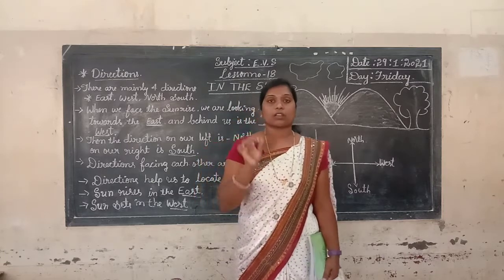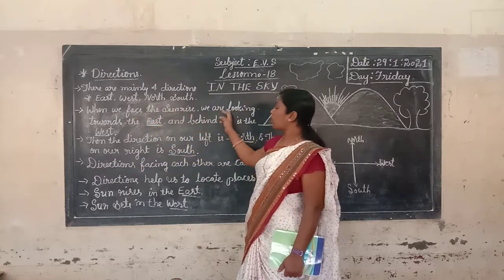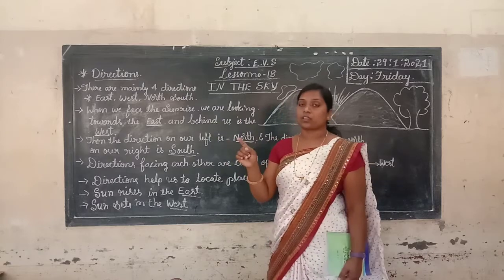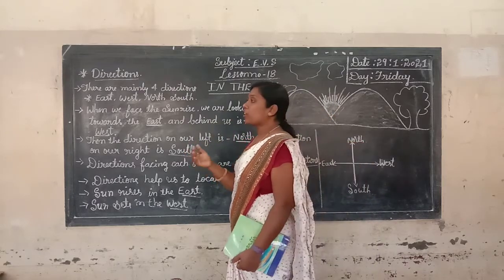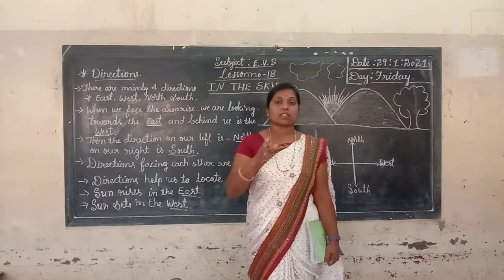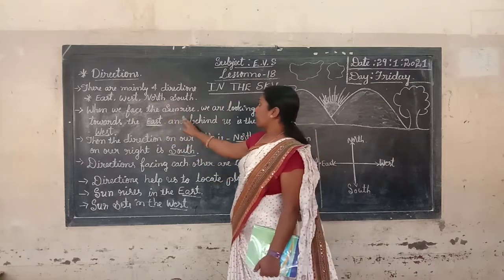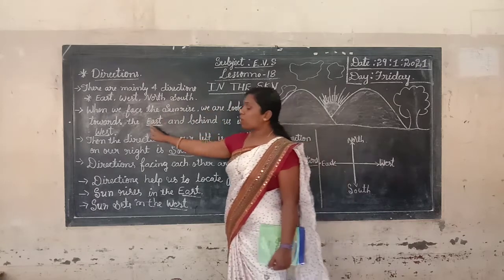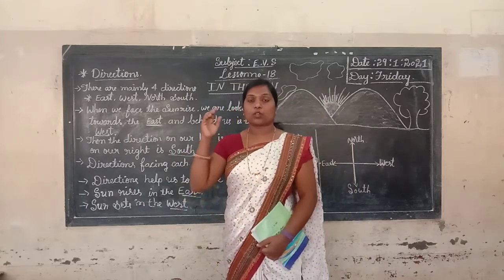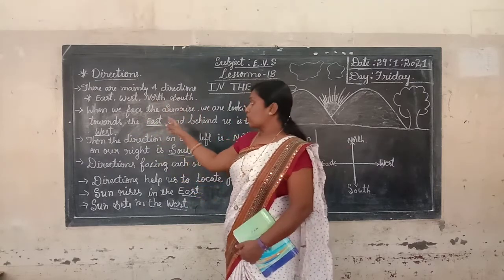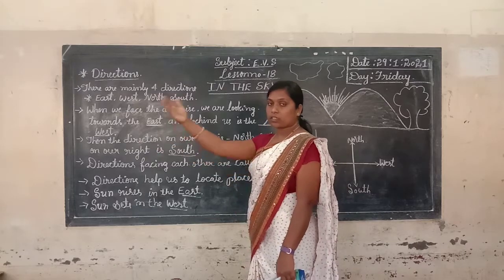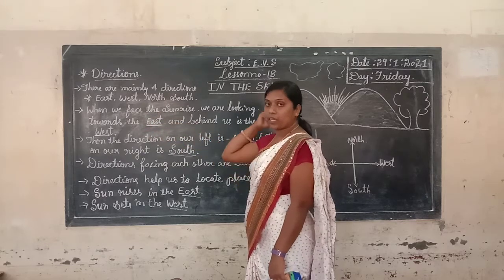The four directions are east, west, north and south. When we face the sunrise, we are looking towards the east. So when we face the sunrise, we are standing in front of the sun — that direction is east. Behind us is the west side. For example, if I am standing in front of the sun rising side, this is called east, and behind me this is west.